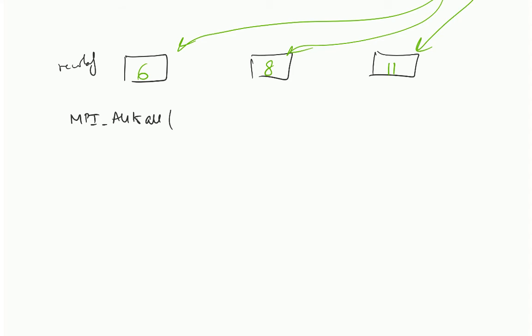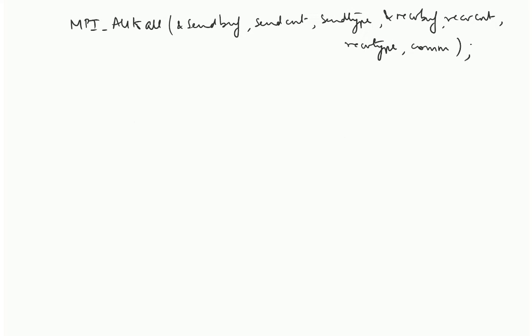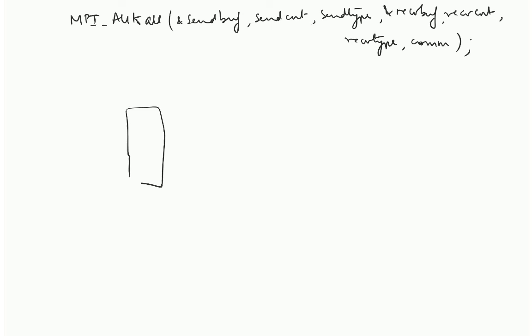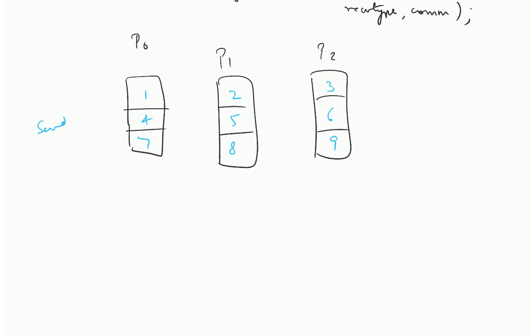MPI all to all. This is also a very important call. Let us see an example of what happens over here. Let us say processor 0 has 3 elements, processor 1 has 3 elements, processor 2 has 3 elements. Let me label it like this because it will make some things clearer. I mean these can be any values. I am just taking this just so that it becomes easier to visualize.